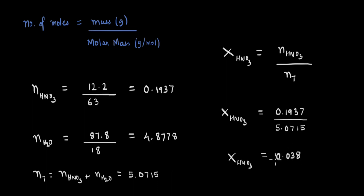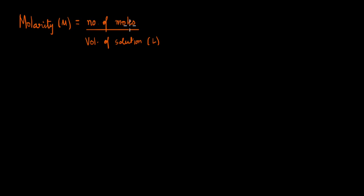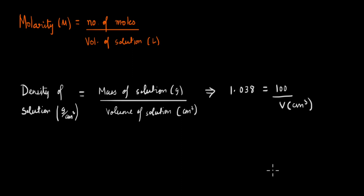If we wanted to find the mole fraction of water, it will be equal to 1 minus 0.038, because the sum of the mole fractions of HNO3 and water equals 1. Next, to calculate the molarity, we use the definition: number of moles divided by the volume of solution in liters. We can use the density formula — mass divided by volume — to find the volume, since we assumed 100 grams of solution.